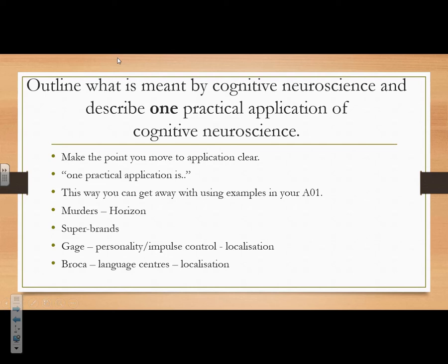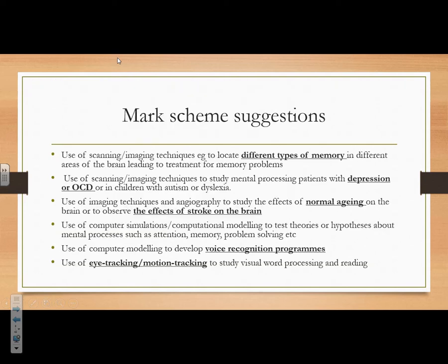Practical applications include: murderers — we looked at the Horizon documentary; Superbrands — fMRI scans where someone looked at an Apple vs non-Apple product and the part of the brain linked to religion lit up; Gage with personality and impulse control and localisation; Broca with language centres. Other suggestions from the mark scheme: different types of memory, mental processes of people with depression, OCD, autism, dyslexia, normal ageing, effects of strokes. You could use computational models, voice recognition programmes, or eye tracking — things we can develop through understanding of internal mental processes.